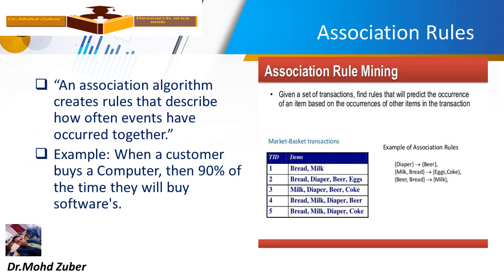Now we are talking about association rules. Given a set of transactions, we find rules which predict the occurrence of an item. Association algorithms create rules that describe how often events occur together.